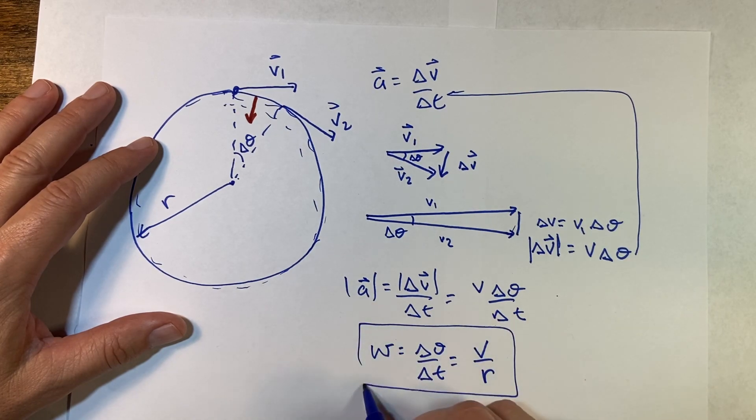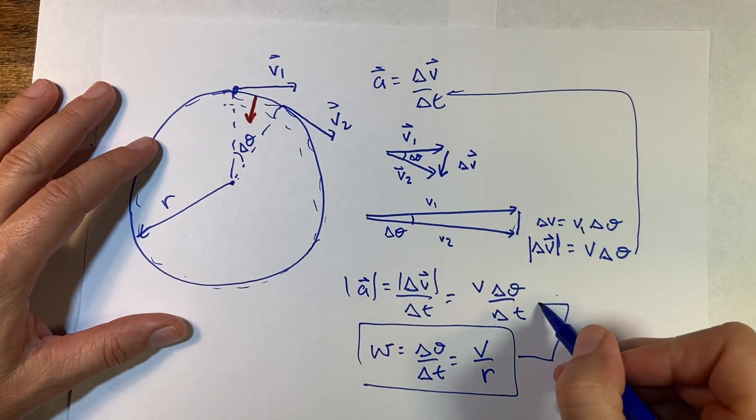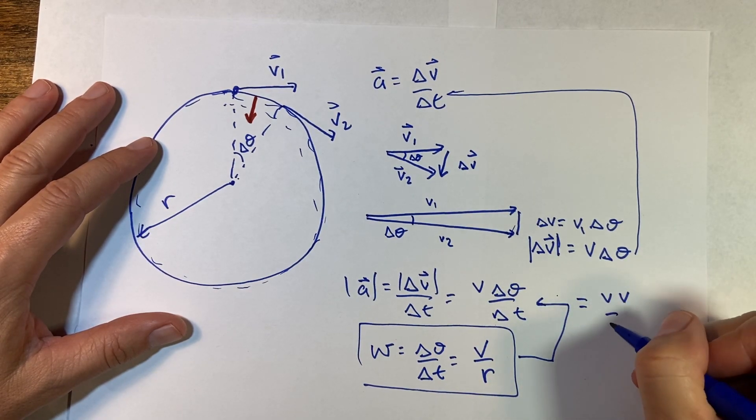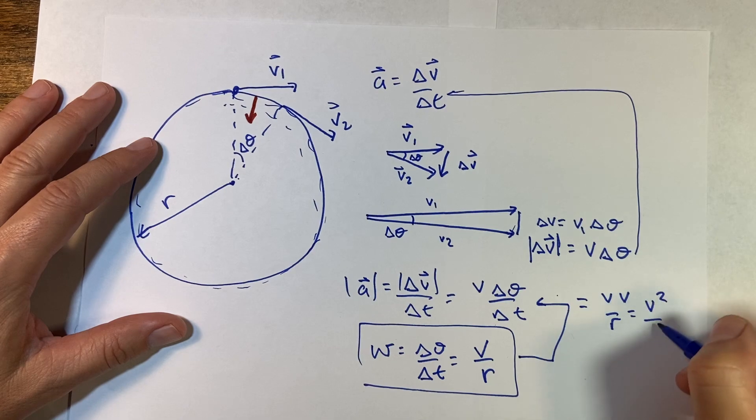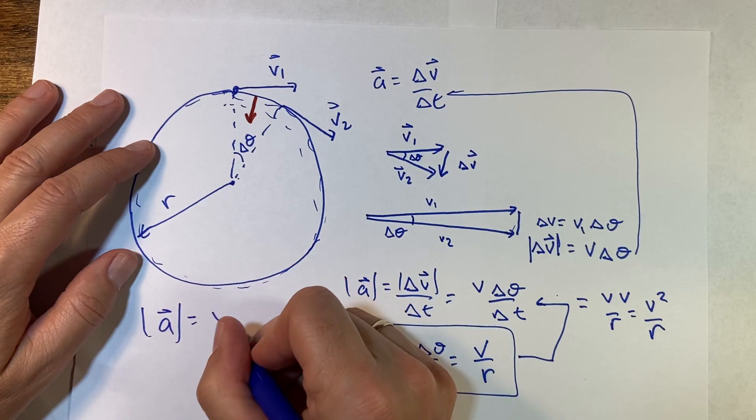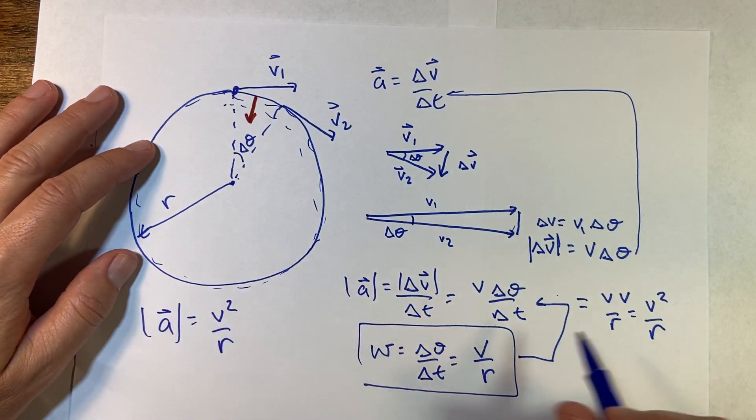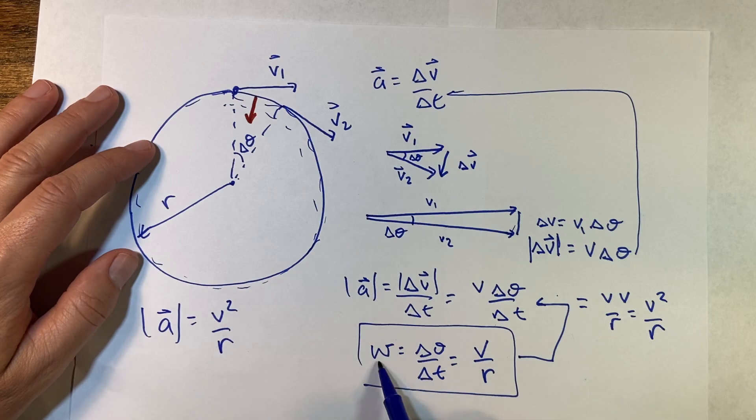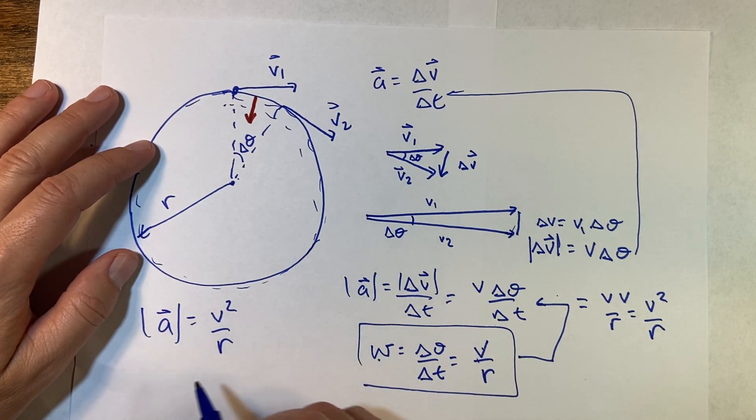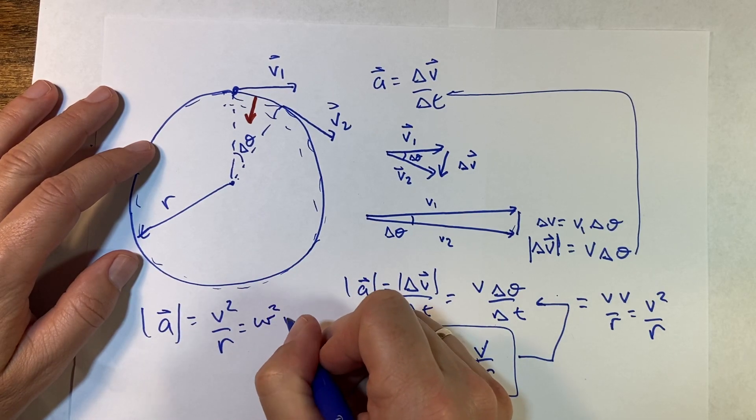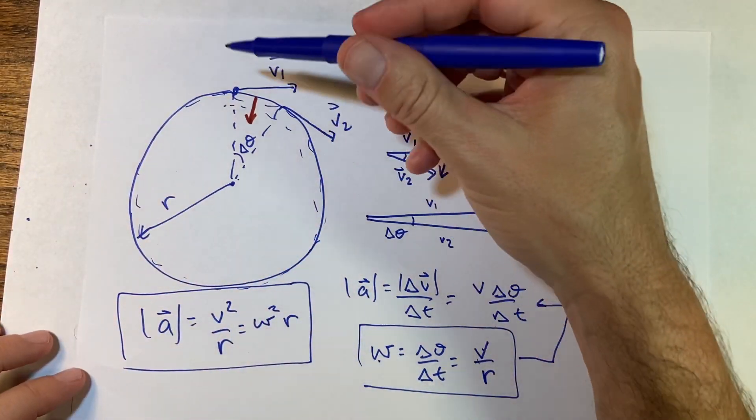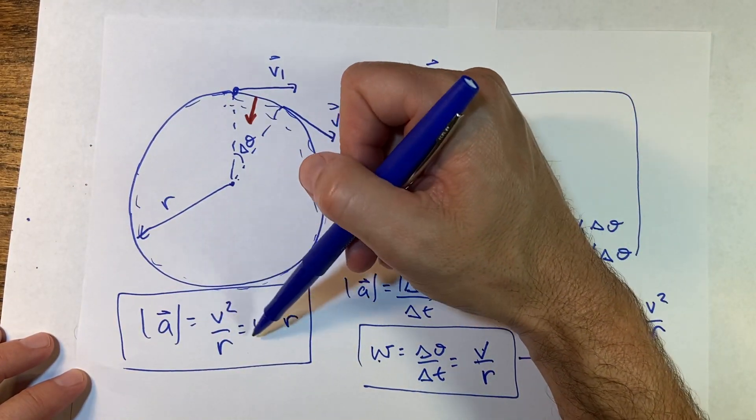So now if I put this in up here, I get the acceleration is v times v over r, v squared over r. So the magnitude of the acceleration is v squared over r. Now if I want to use the angular velocity instead, then if I put in v equals r omega, this would be equal to omega squared times r. So there's two important things: one, the direction is pointing towards the center of the circle, and two, this is the magnitude.